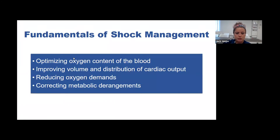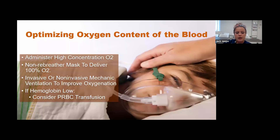The fundamentals of shock treatment involve optimizing the oxygen content of the blood, improving volume and distribution of cardiac output, and reducing oxygen demands while correcting metabolic derangements. Use a non-rebreather to deliver 100% O2, invasive or non-invasive mechanical ventilation as appropriate, and if hemoglobin is low—since that's what carries oxygen—consider a packed red blood cell transfusion.